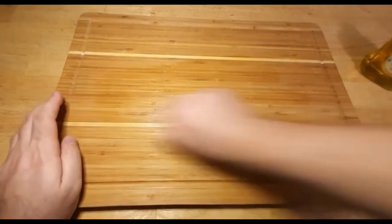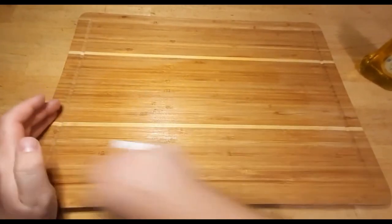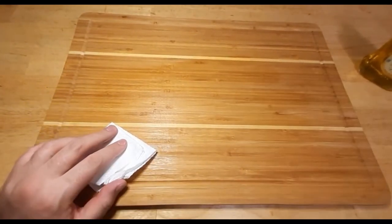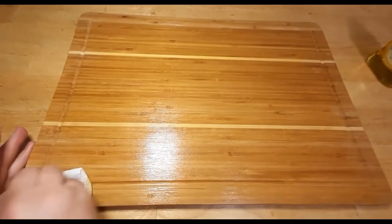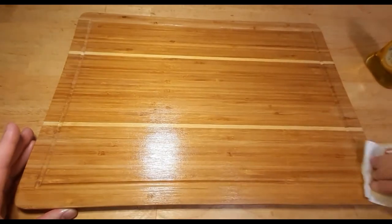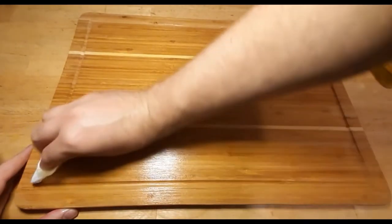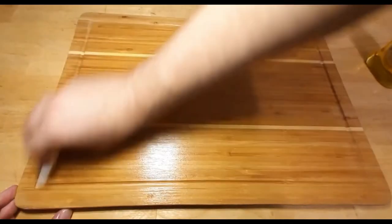Now, it's time to oil your bamboo cutting board. For this, we recommend using food-grade mineral oil, as it's safe for contact with food. Pour a small amount of oil onto the board's surface and spread it evenly with a clean cloth or paper towel.